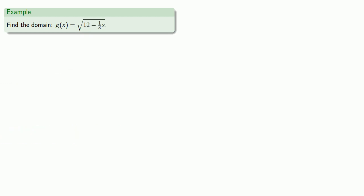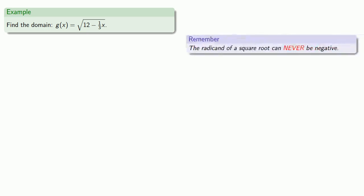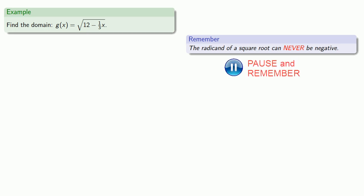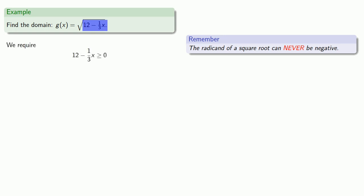How about a square root function? Let's find the domain of g(x) = √(12 − x/3). Remember, the radicand of a square root can never be negative.